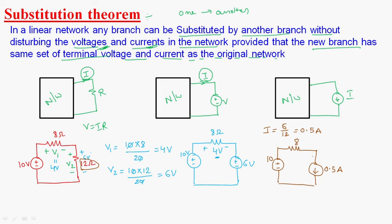Let us verify this. What is the current flowing in the original circuit? As it is a series combination, the total resistance is 20 ohms, voltage is 10 volts, so current I = V/R = 10/20, which is equal to 0.5 amperes. So the current flowing is 0.5 amperes — this confirms the substitution theorem. Thank you.